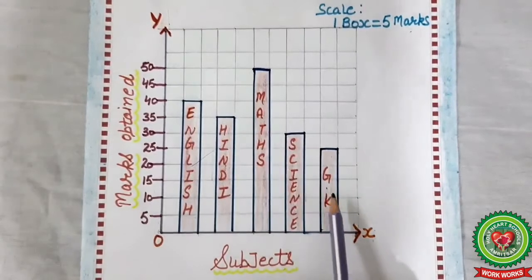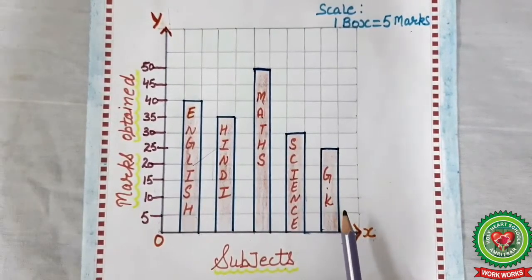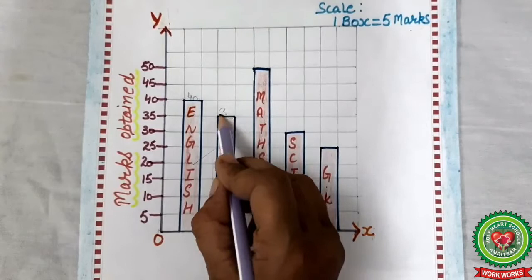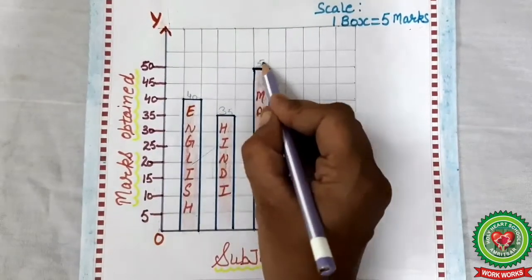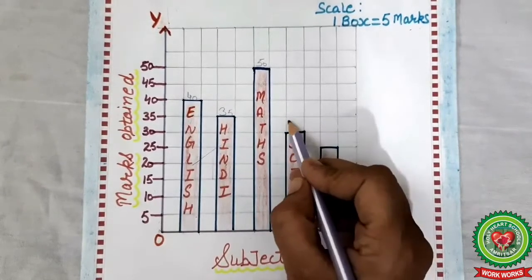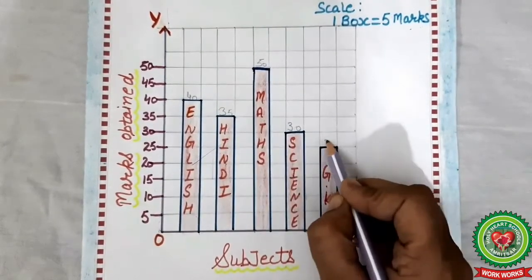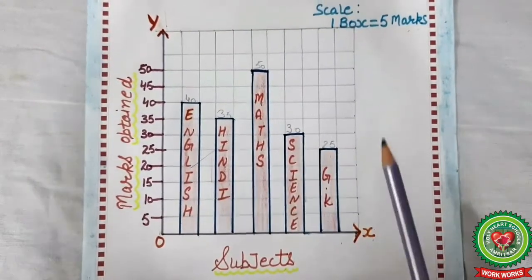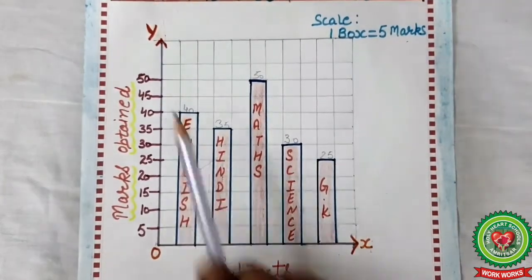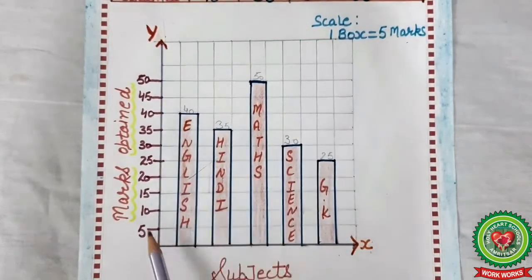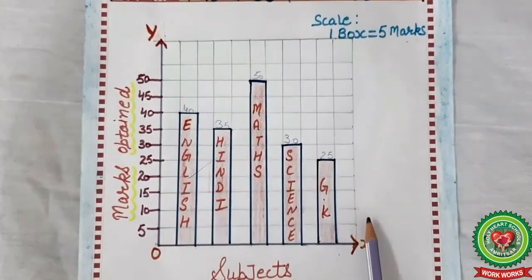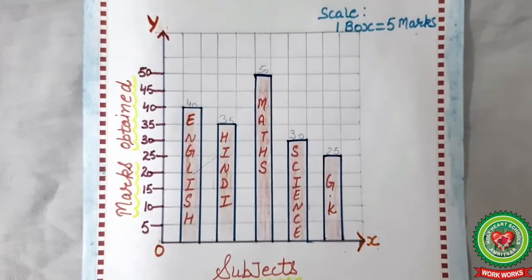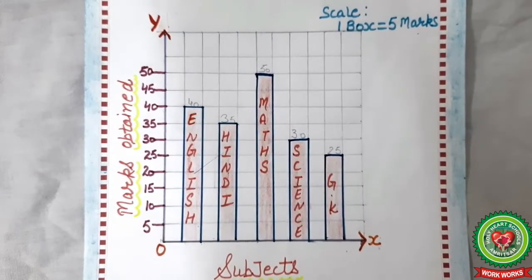And at last, this will be the representation of bar graph. English 40 marks, Hindi 35, Maths 50, Science 30, and last one GK 25. So students, it is a complete bar graph. First of all, you have to write the scale, then draw X-axis and Y-axis, then write the information, write the common table here, and then draw the bar graph according to their values. Today we have learnt reading a bar graph and drawing a bar graph.